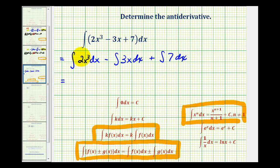So the anti-derivative of 2x cubed with respect to x is going to be 2 times the anti-derivative of x cubed, which will be x to the 4th divided by 4, minus 3 times the anti-derivative of x to the 1st, which would be x to the 2nd divided by 2, plus the anti-derivative of 7 with respect to x, which is given here. So we have plus 7x plus C.